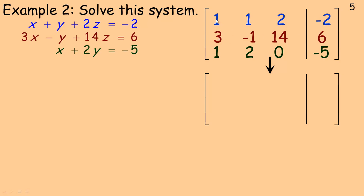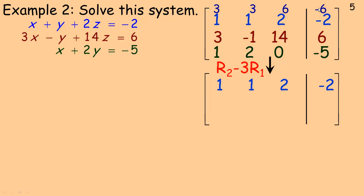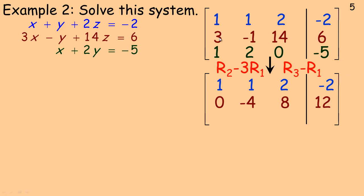I want to get a triangle of zeros, so I'll work on the 3 first. Taking row 2 minus 3 times row 1: 3 minus 3 is 0, negative 1 minus 3 is negative 4, 14 minus 6 is 8, and 6 take away negative 6 is 12. So the first row stays and row 2 becomes 0, negative 4, 8, 12. Then for row 3, since there's a 1 in both row 1 and row 3, I subtract row 1 from row 3: 1 minus 1 is 0, 2 minus 1 is 1, 0 minus 2 is negative 2, and negative 5 take away negative 2 is negative 3.